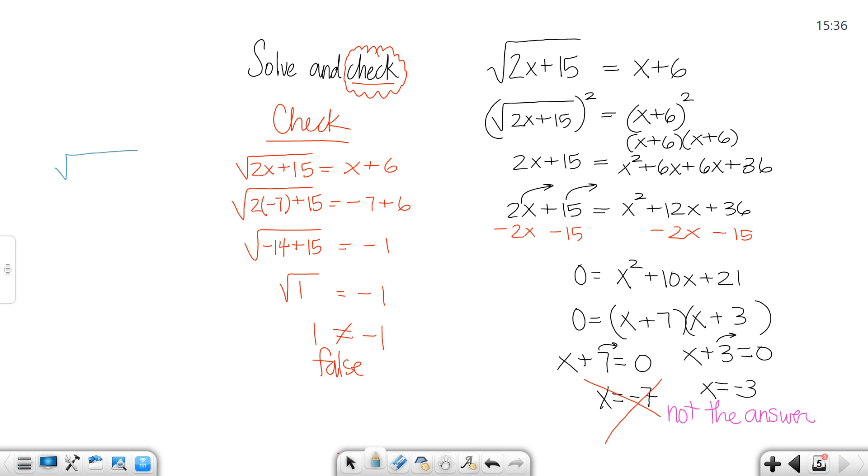So let's check the other one. Now, when I check, I always want to check in the original. You don't want to check in the squared part or the foil part or the factor part. Always check in the original. So we're going to plug in negative 3. That would give me the square root of 9 on this side, which is 3. On the right side, negative 3 plus 6 would give me 3. And that's a true statement.